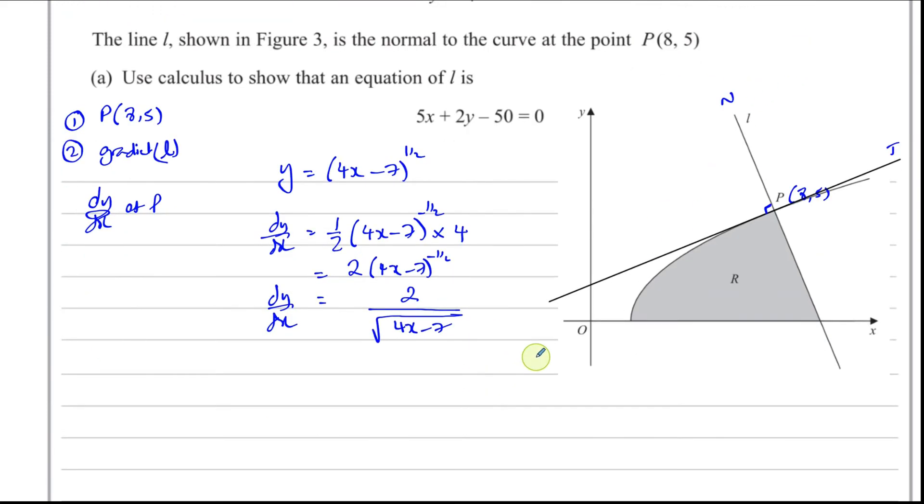So now we can find what the gradient of the tangent is. The gradient of the tangent is basically when you put inside here, you put when x equals 8, you've got dy/dx is equal to 2 over the square root of 4 times 8, which is 32 minus 7, which is 25. So that's going to give you 2 over 5. So that is the gradient of the tangent. Therefore, the gradient of the normal at the point P is going to be equal to minus 5 over 2. It's a negative reciprocal of this.